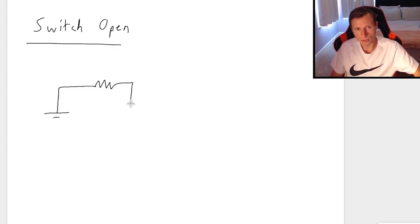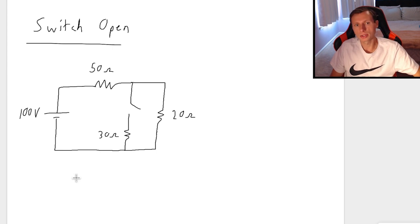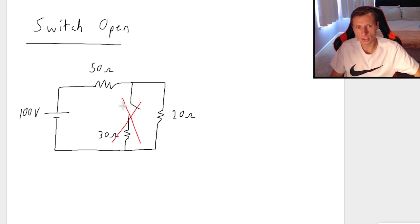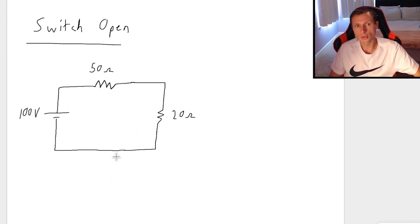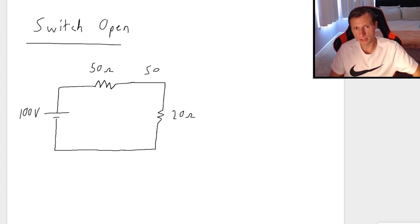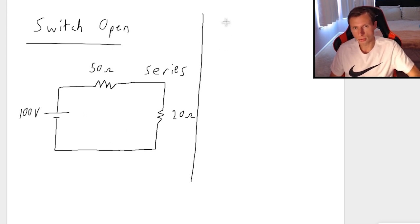So first I'll draw it in the switch open position. The circuit would look like this — same drawing as the original, with the numbers. Now when the switch is open, the shortcut you should know is that wherever there's an open switch, that entire section of circuit is gone. I'm just going to erase it entirely, because this is really what the circuit looks like. And all of a sudden, all we have is two resistors in series, because there's just one road for the electrons.